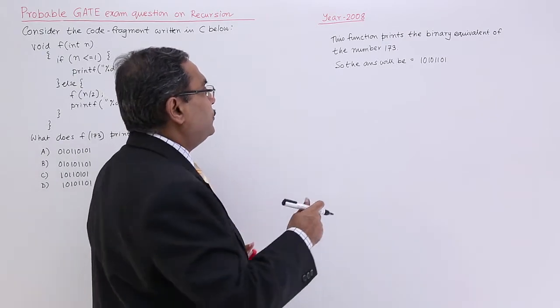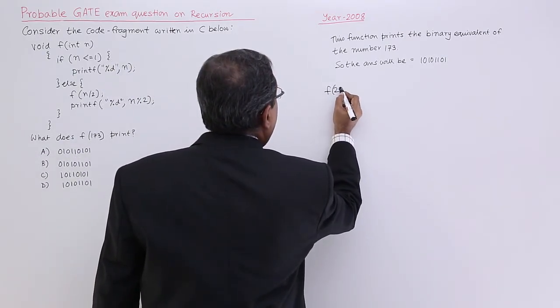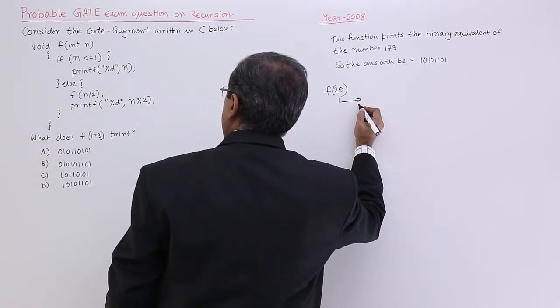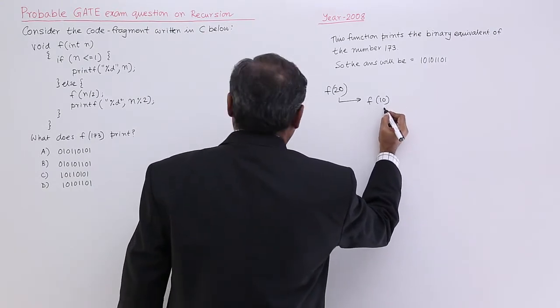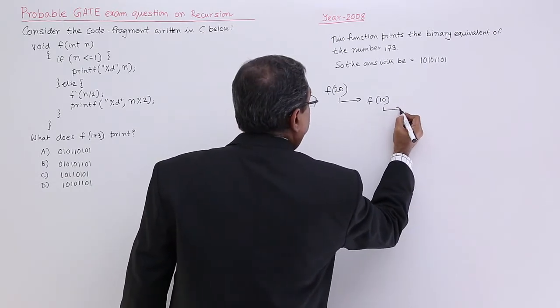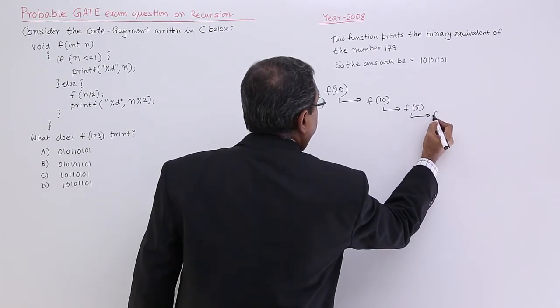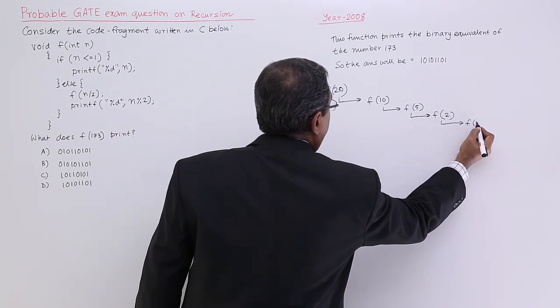Now, see I can show you in this way. Say f I am just calculating f 20 then it will, so 20 is not less than equal to 1. It will call for f 10 then f 10 will call f 5, f 5 will call f 2, and f 2 will call f 1.